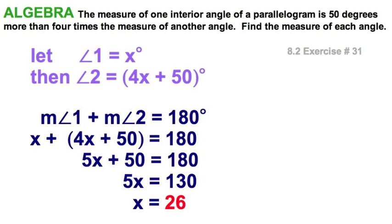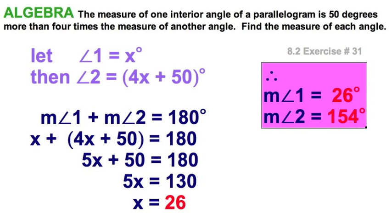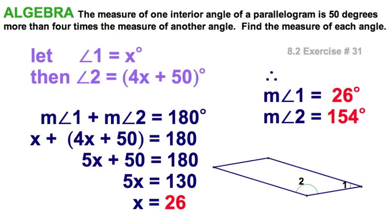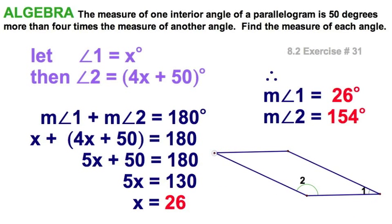That 26, that's going to give me measure of angle 1. I can substitute back into the expression for angle 2, and I know the measure of angle 2, and this is what my figure looks like, just like that. It could have a few different shapes, but right there, angles 1 and 2, 26 and 154.